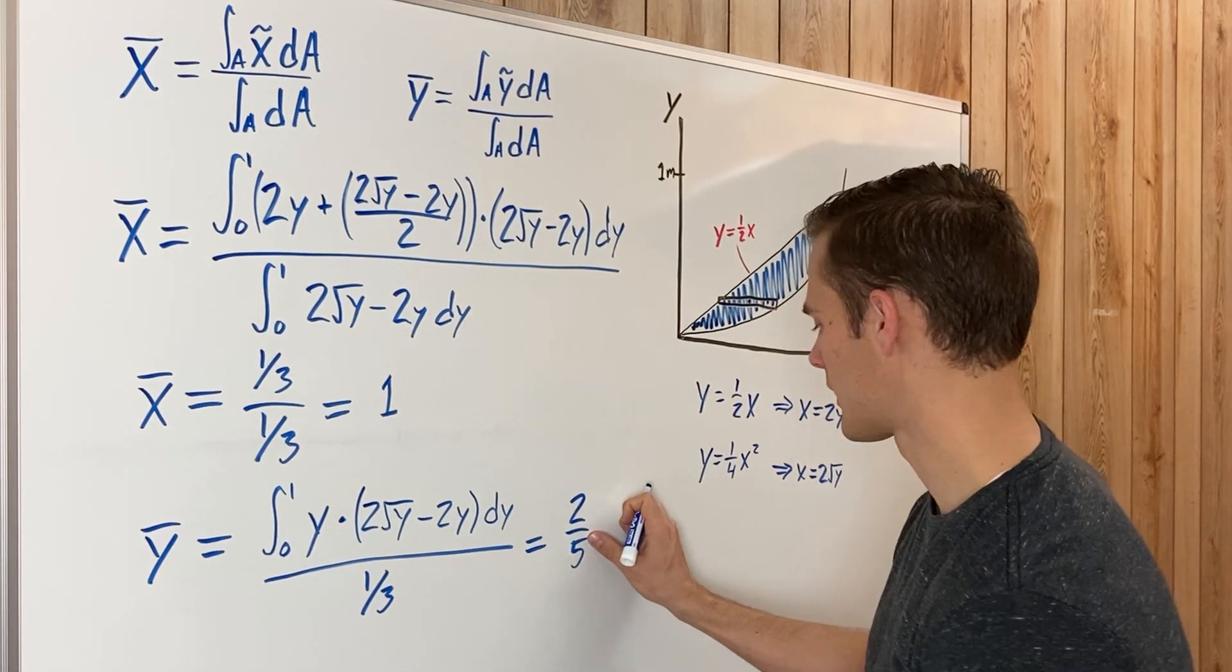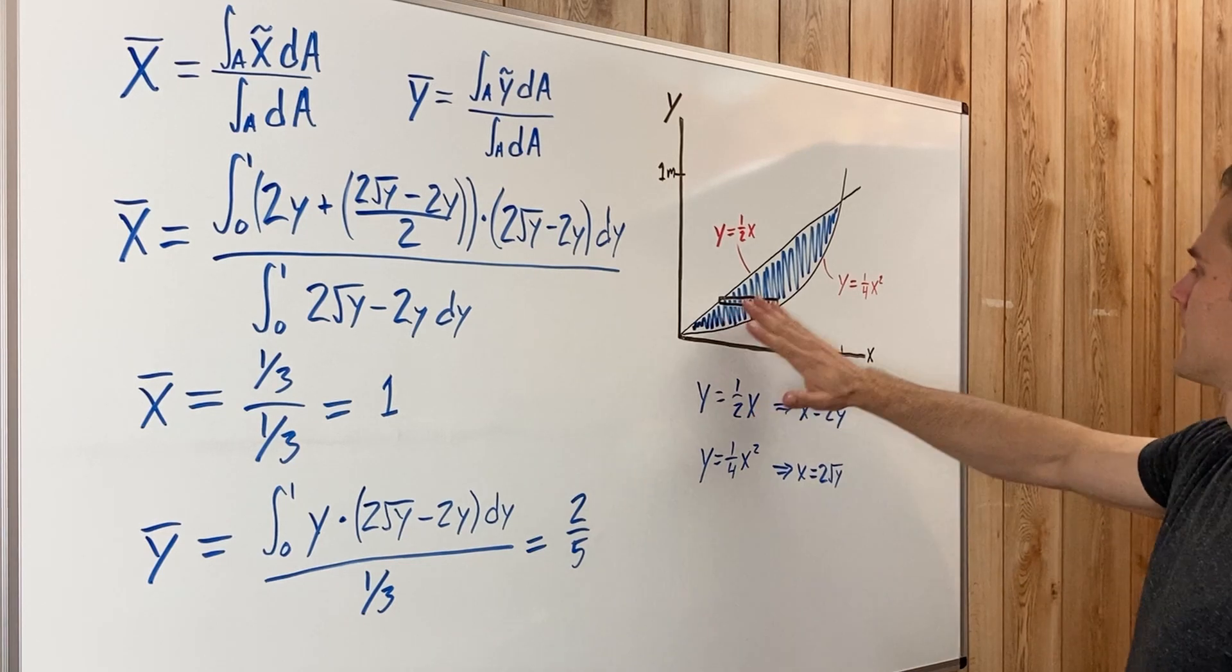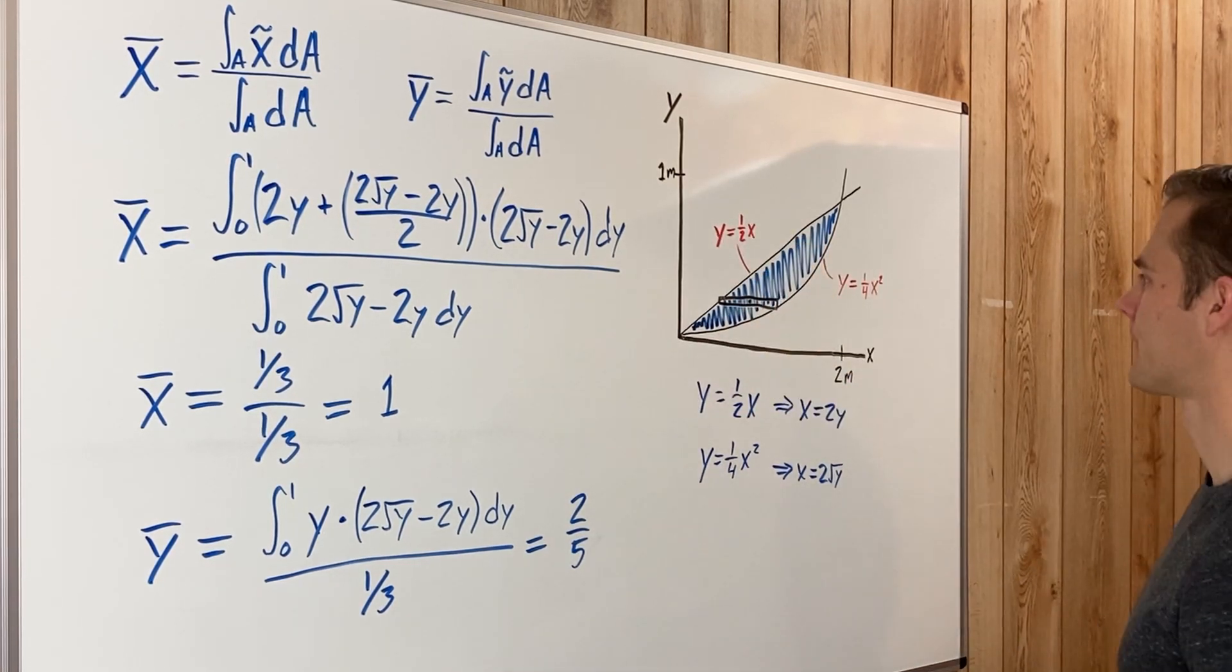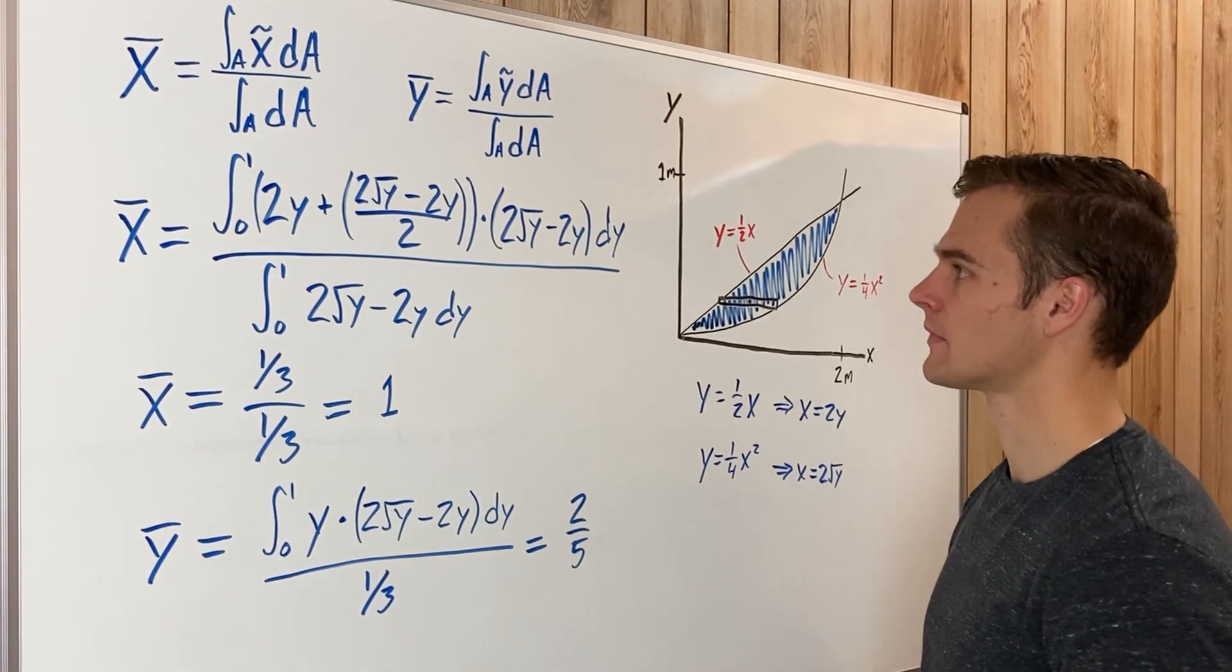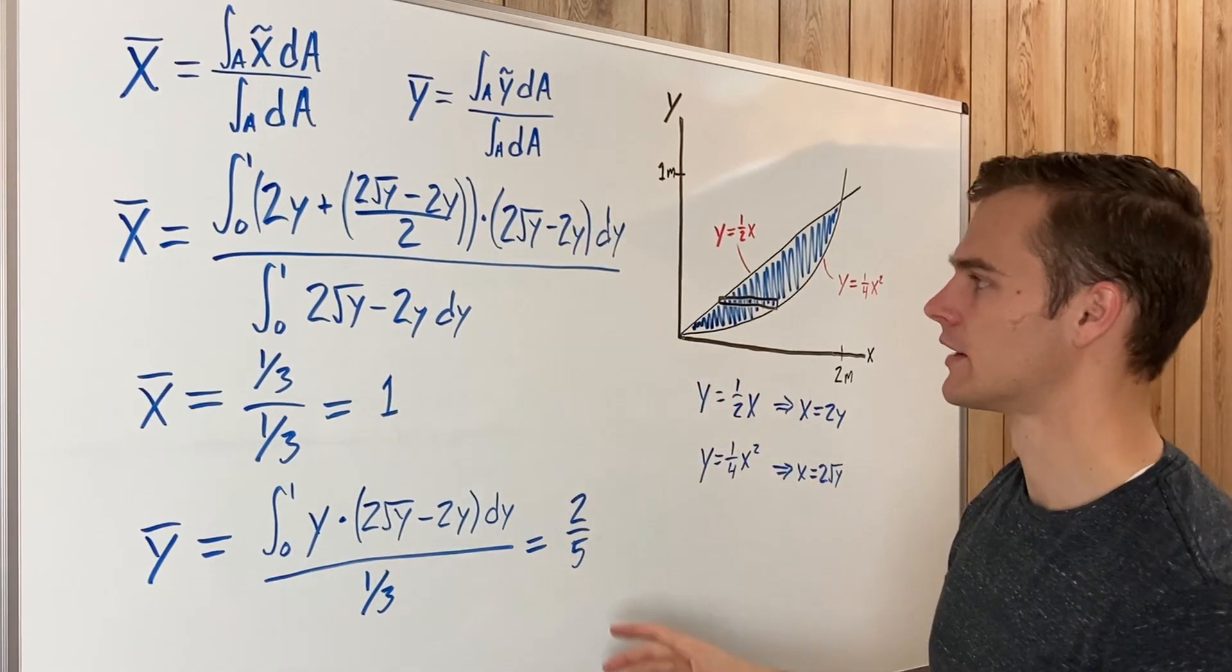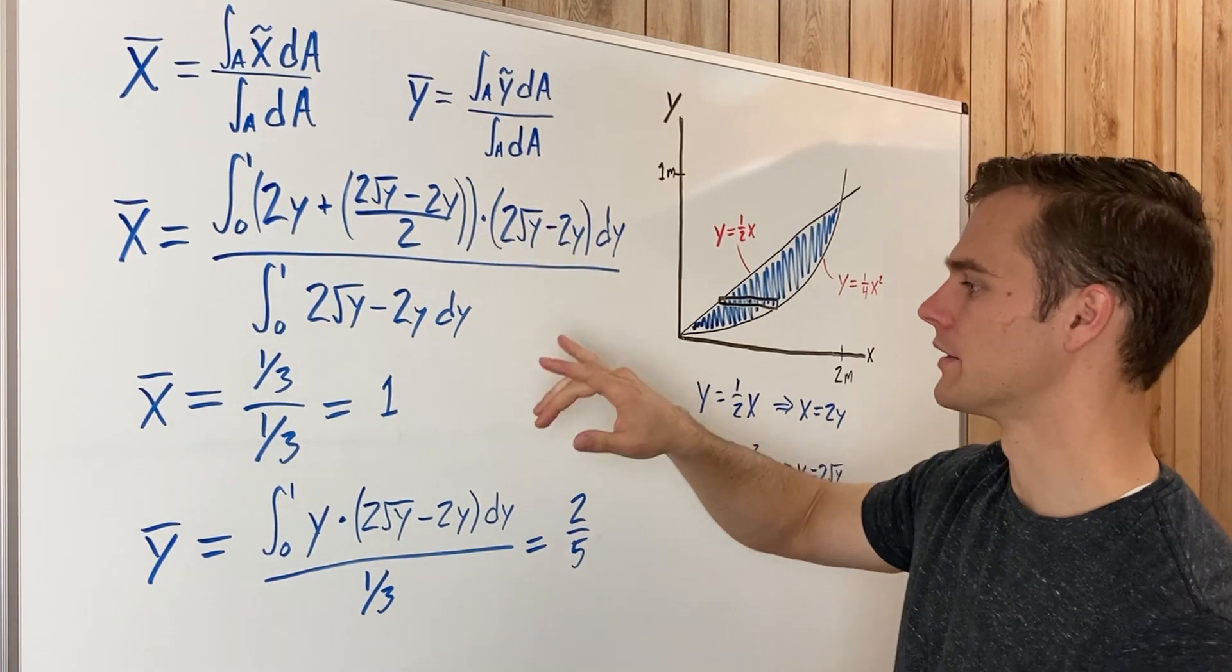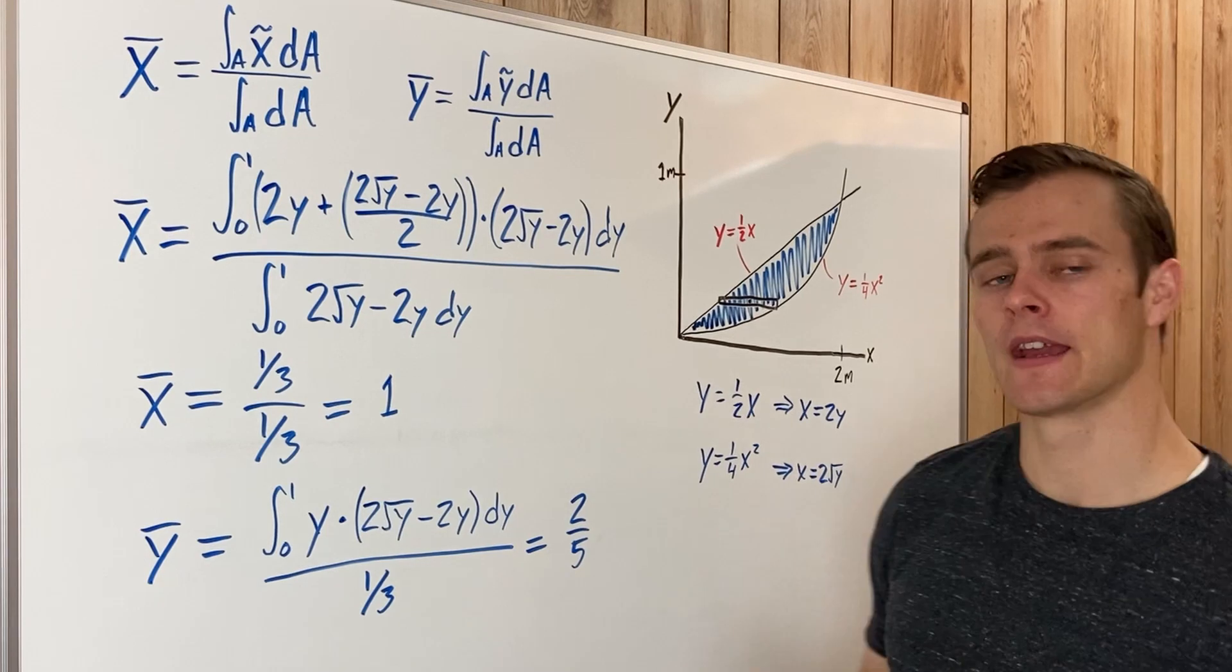So that's not quite in the center. That makes sense because it seems like more of the mass, more of this area, is below the halfway mark. So the hardest part of this is really just setting up these equations, knowing what X tilde and Y tilde is, what DA is. But once you get a hang of that, it's really not that difficult.